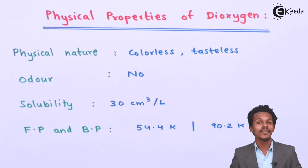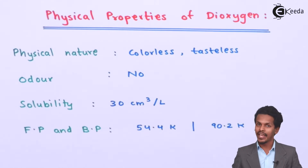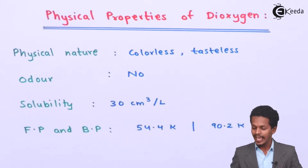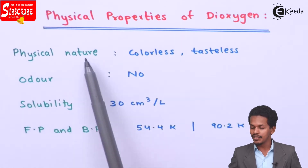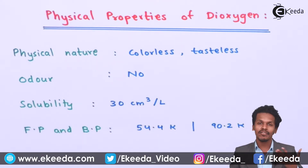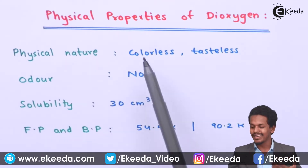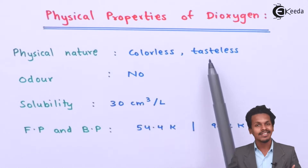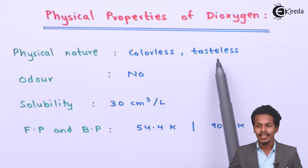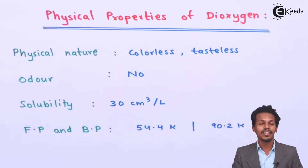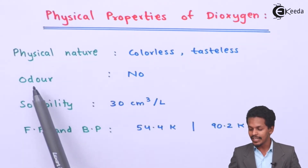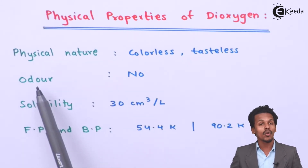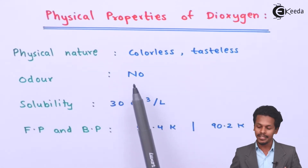In this topic we are going to talk about the physical properties of dioxygen. Starting with the first one, that is physical nature. Dioxygen is basically a colorless molecule and obviously it is tasteless. That's the reason that whenever we consume oxygen, we can't feel any taste of it. Talking about odor, it has no particular odor.